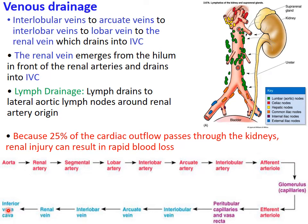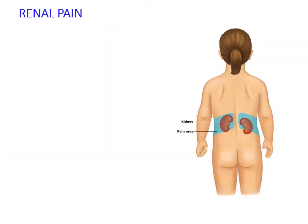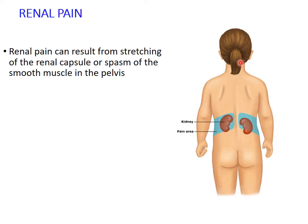Venous drainage follows the same pattern in reverse: interlobular vein, arcuate vein, interlobar vein, and then the renal vein, which drains into the inferior vena cava. Lymphatic drainage goes to the lateral aortic lymph nodes around the origin of the renal artery.